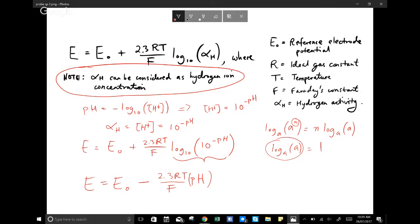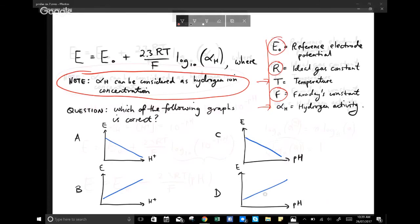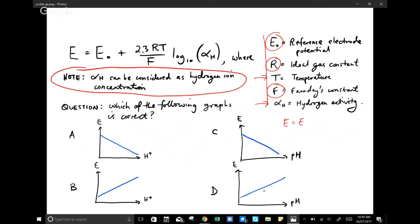So this has to choose one of our answers. So back over here, I'm just going to write down what we figured out. E is equal to E naught minus 2.3 RT on F pH. We can rearrange this a little bit and we'll make it look a bit easier. I'll make it E is equal to negative 2.3 RT on F pH plus E naught. I've just rearranged it a bit.